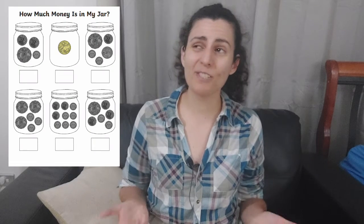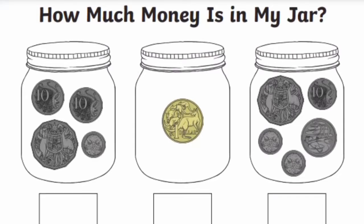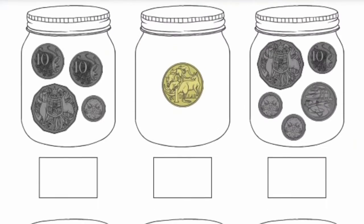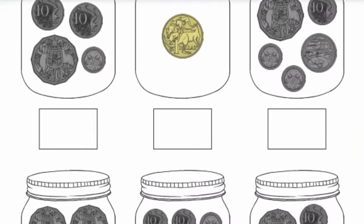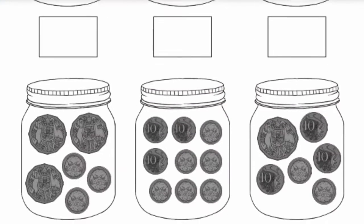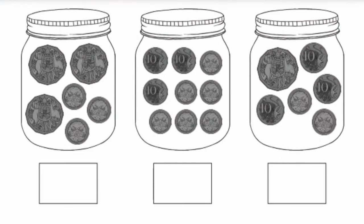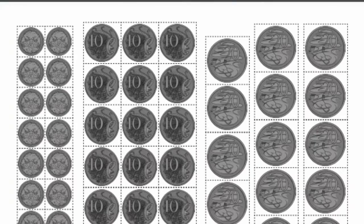You can also try this 'How Much Money Is in My Jar' worksheet. Like all these worksheets, it uses Australian money and children can practice counting change up to $10, and also use cut-out coins themselves to create a given amount.